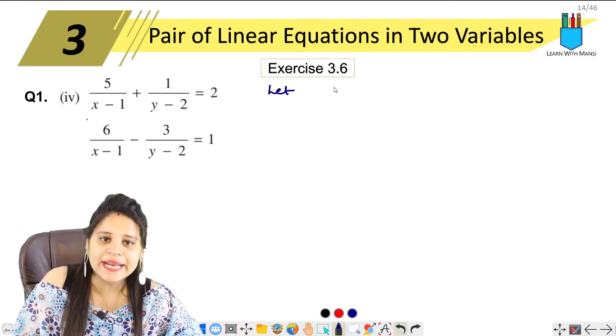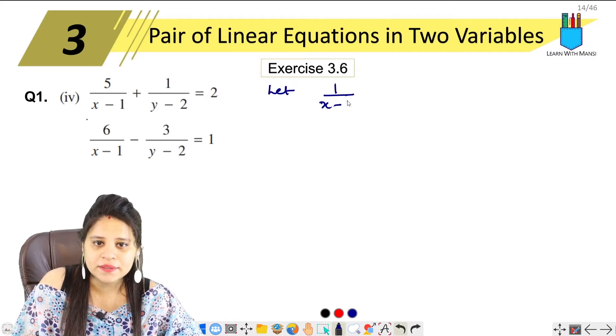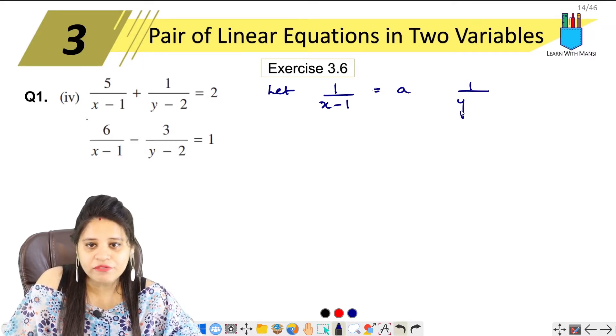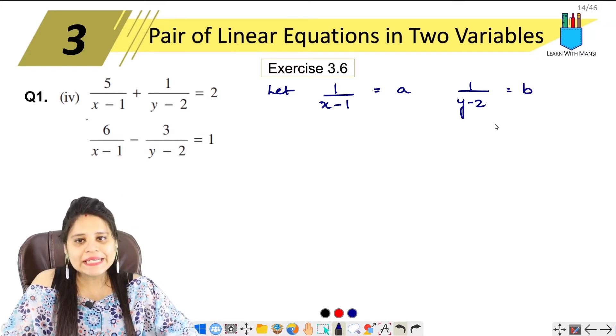Let 1 upon x minus 1 equals to a and 1 upon y minus 2 equals to b.